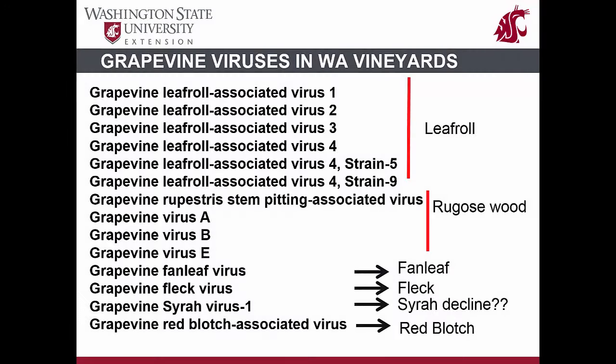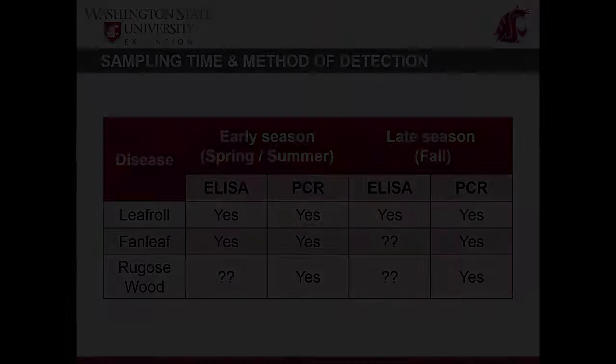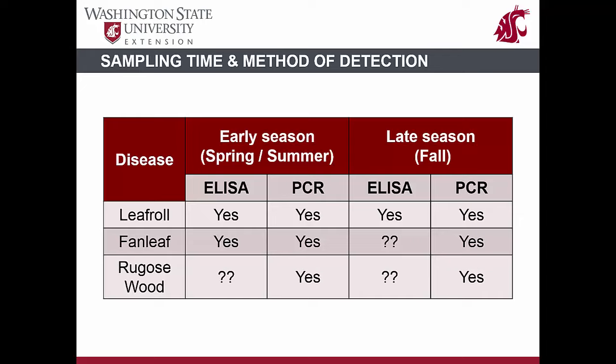Results from our statewide survey of Washington vineyards indicated the presence of grapevine leaf roll-associated virus 1, 2, 3, and 4, and its strains 5 and 9. In addition, four viruses associated with rugose wood complex, grapevine fan leaf virus, grapevine fleck virus, grapevine Syrah virus 1, and grapevine red blotch-associated virus have been documented in Washington vineyards.